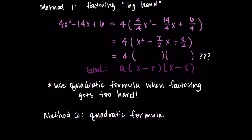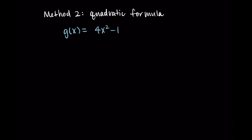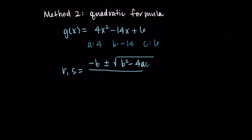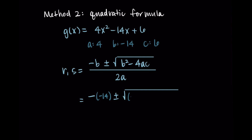For method two, we're going to use the quadratic formula. Starting with 4x squared minus 14x plus six, I identify a equals 4, b equals negative 14, and c equals 6. My formula tells me that the horizontal intercepts r and s equal negative b plus or minus the square root of b squared minus 4ac all over 2a. Substituting in: negative a negative 14, plus or minus the square root of negative 14 squared minus 4 times 4 times 6, all over 2 times 4.